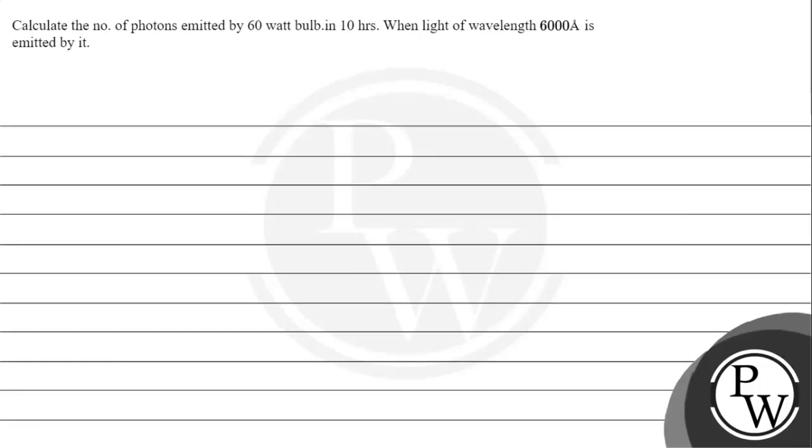Hello, let's read the given question. The question says calculate the number of photons emitted by a 60 watt bulb in 10 hours when light of wavelength 6000 angstrom is emitted by it. So the key concept we need to understand is the concept of energy of photon.